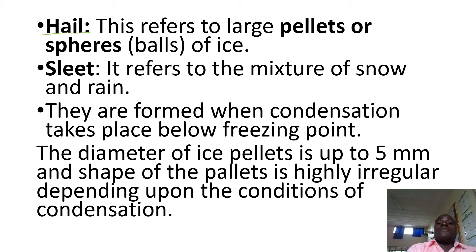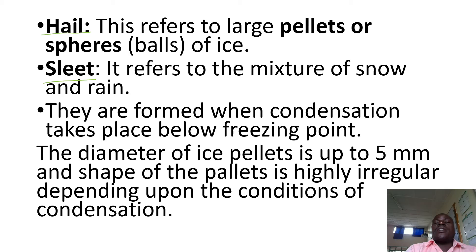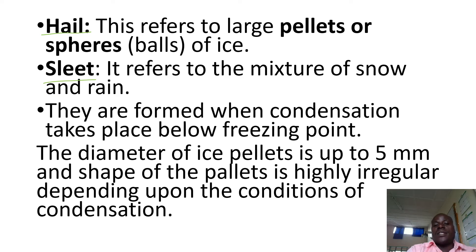Hailstones refer to large spheres or pellets of ice — they are large balls of ice. One may confuse them with snow, but hailstones are bigger than snow in size. Then we have sleet. Sleet refers to a mixture of snow and rain that come together mixed. Sleet is also formed when condensation takes place below the freezing point.